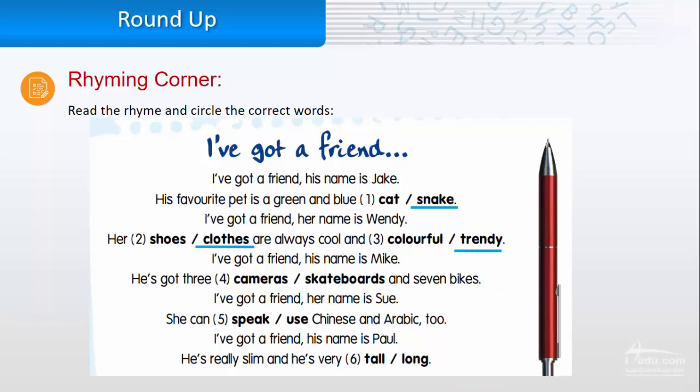I've got a friend. His name is Mike. He's got three skateboards and seven bikes.